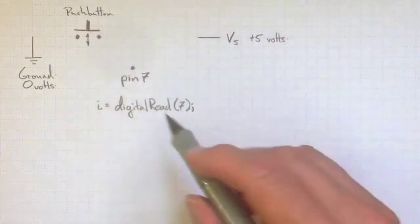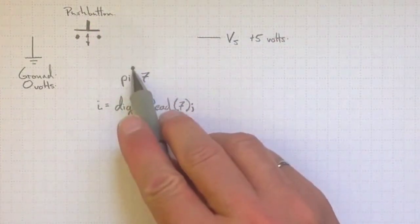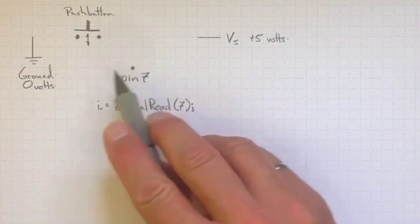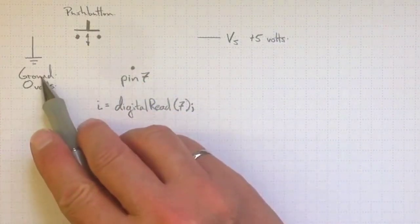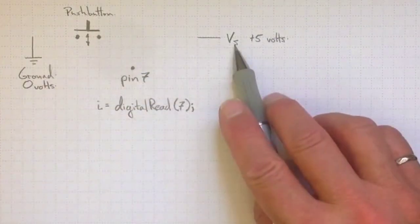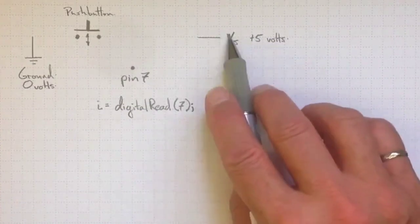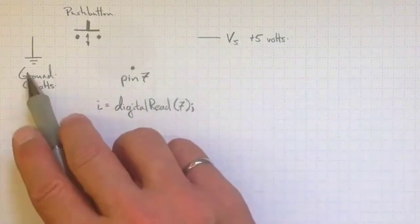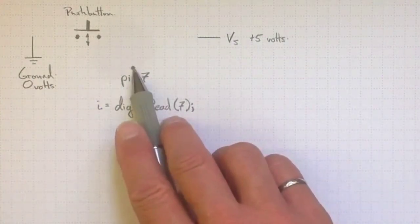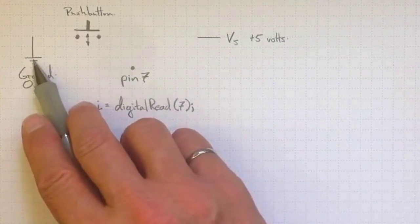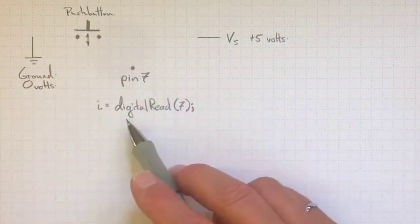then I need to have some kind of a circuit that will control what voltage pin number 7 sees. I've got a ground connection that's always at 0 volts, and a supply voltage that's always at about plus 5 volts, and pin 7 can tell the difference between 5 volts and 0 volts. So I'd like pin 7 to be either 5 volts or 0 volts, depending on what I've done with the push button.